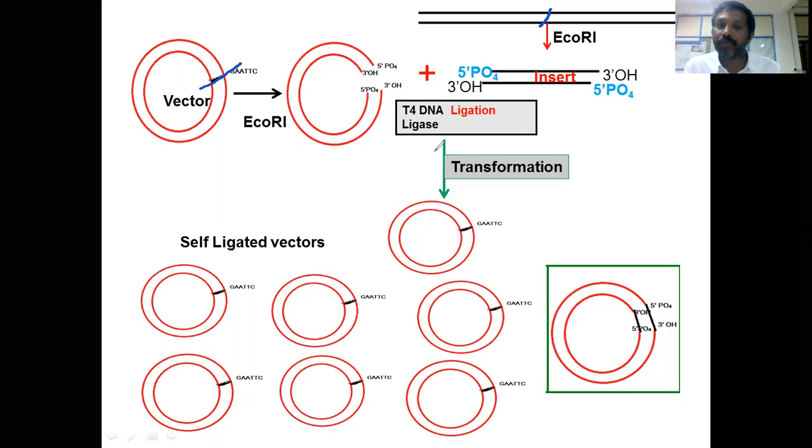When you screen the transformants, you find most of them are vectors. Most of the transformants, 90% or more, consist of self-ligated vectors.